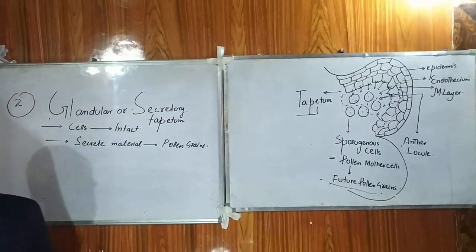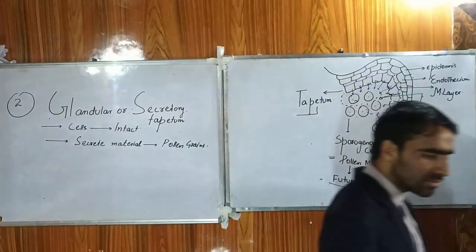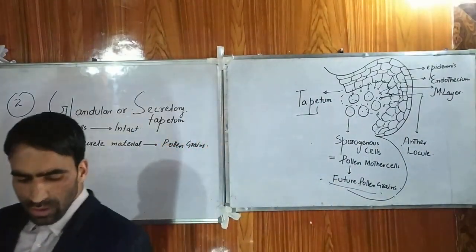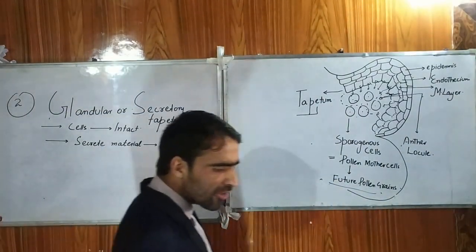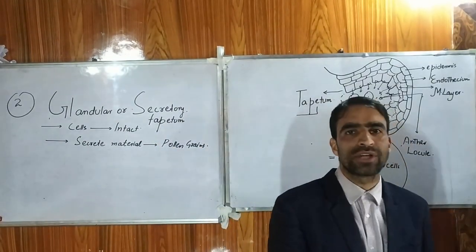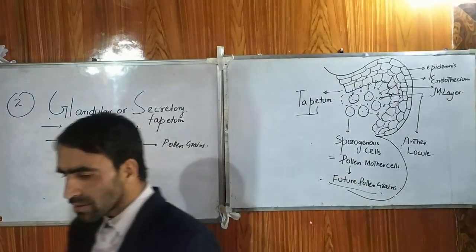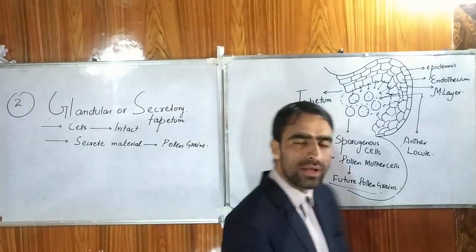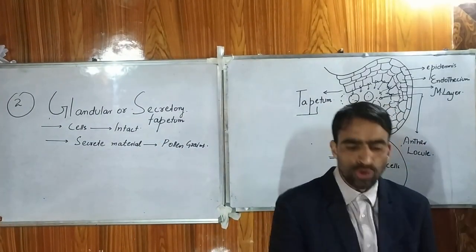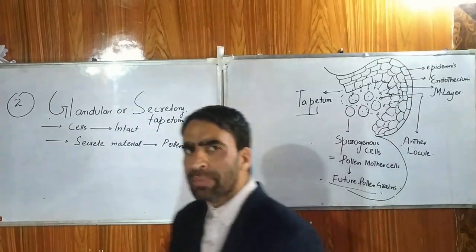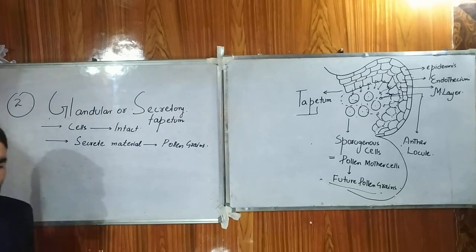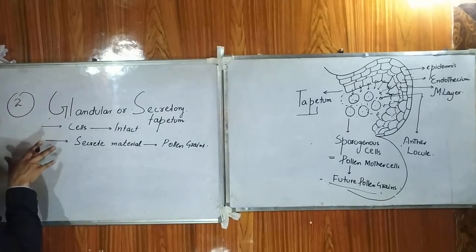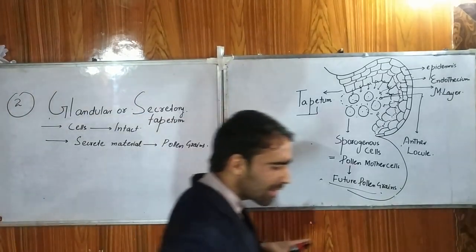Assalamu alaikum. Let us begin with reproductive biology where we are discussing the types of tapetum. We discussed the role played by the first type, the periplasmodial type of tapetum, where the cells degenerate at earlier stages to release material in the form of periplasmodium. Today we discuss another type of tapetum whose behavior is totally opposite — here the cells remain intact up to the last development of the pollen grains.